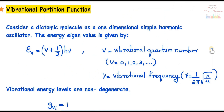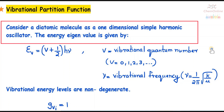Let us see how to derive expressions for vibrational partition function. When we deal with the vibrations of a molecule, for example a diatomic molecule, we consider the molecule as a simple harmonic oscillator. We have seen that while dealing with rotational partition function or evaluating rotational energy, we consider the diatomic molecule as a rigid rotator.